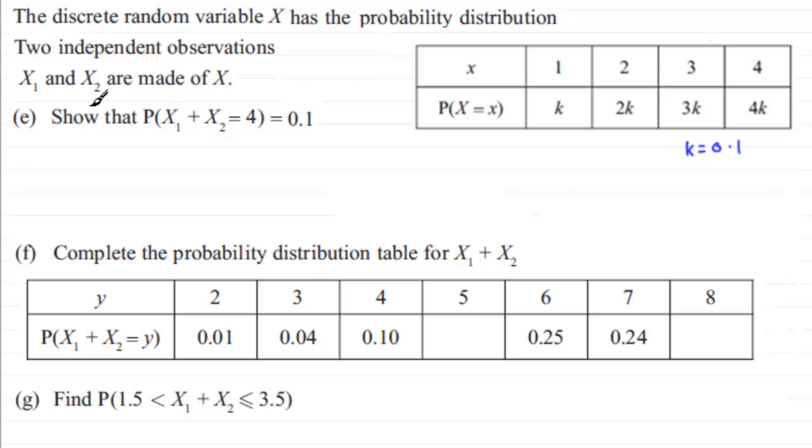We've got to show in part E that the probability that the sum of those two observations, when it equals 4, the probability turns out to be 0.1. So how are we going to do this? First of all, let's put down the probability that we have X₁ plus X₂ equals 4. How are we going to get a total of 4? It can be if we have a 1 and then a 3, or the probability of getting a 3 first and then a 1, or you could get the probability of two 2s. All of these will come to a total of 4.